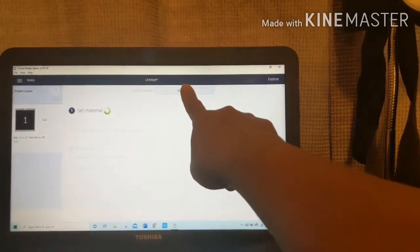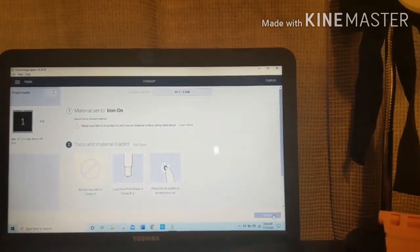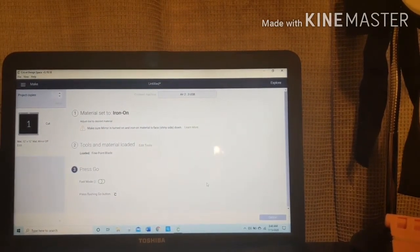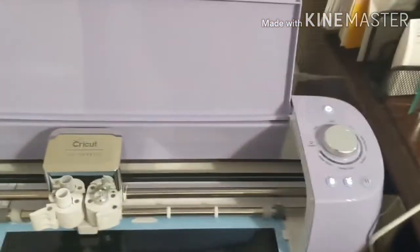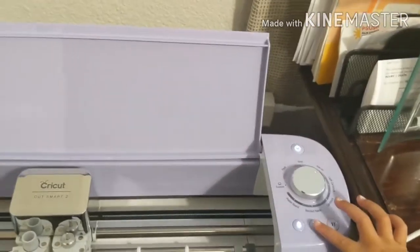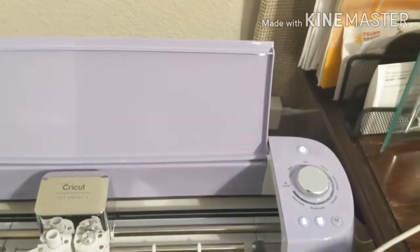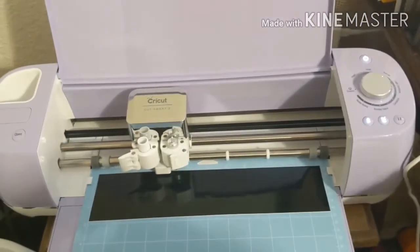So now it's going to tell you what machine you have. And mine's connected. So now we're going to go back to our machine. And we're going to click on the Cricut button. And so now it's going to make it.